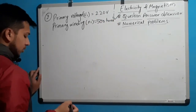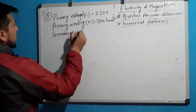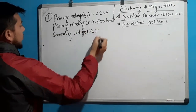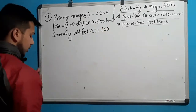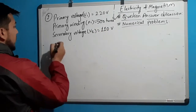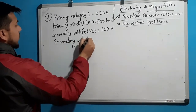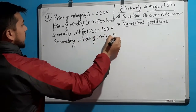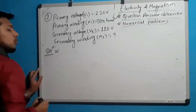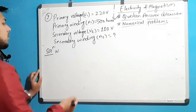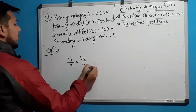We are given the secondary voltage V2 equal to 110V, and we need to find the secondary winding N2. The formula of the transformer is: V1 upon N1 equals V2 upon N2, or equivalently V1 upon V2 equals N1 upon N2.